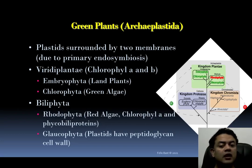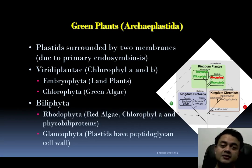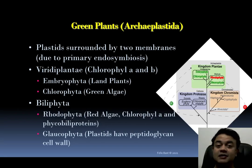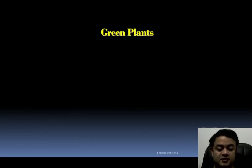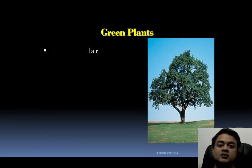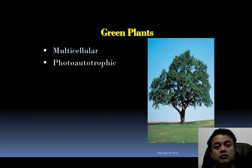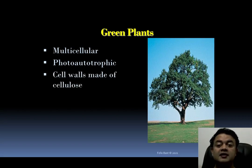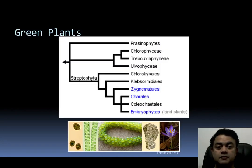Glaucophyta have plastids containing peptidoglycan in their cell walls — an interesting parallel with bacteria, since peptidoglycan is normally found only in bacterial cell walls. Green plants are mostly multicellular, photoautotrophic, and have cell walls made of cellulose.